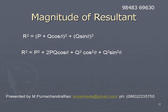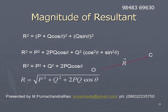Expanding (P + Q·cos(theta))², we get P² + 2PQ·cos(theta) + Q²·cos²(theta), plus Q²·sin²(theta). Since Q²·cos²(theta) + Q²·sin²(theta) = Q²(cos²(theta) + sin²(theta)) = Q², on simplification we get R² = P² + Q² + 2PQ·cos(theta). Therefore, R = √(P² + Q² + 2PQ·cos(theta)).